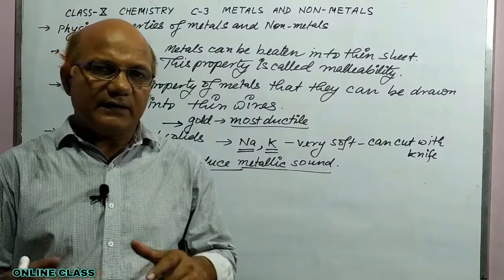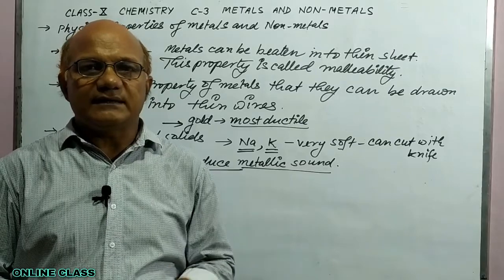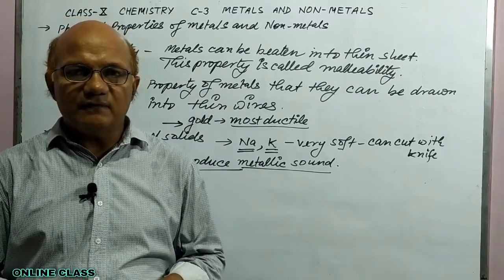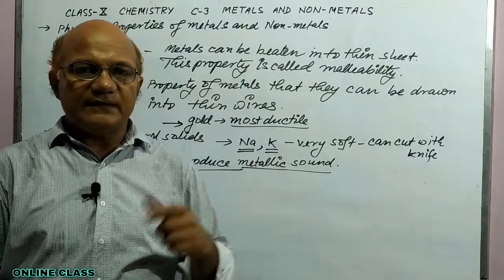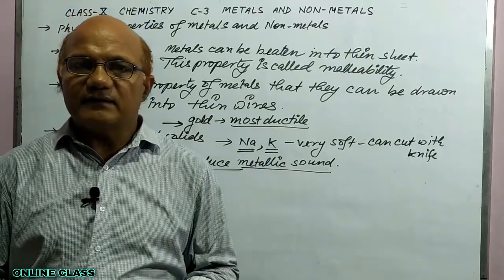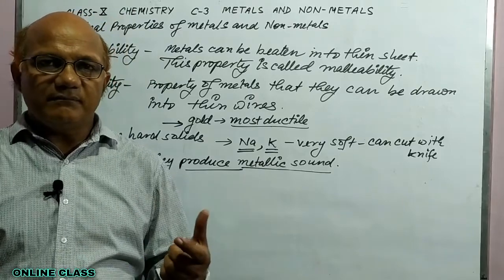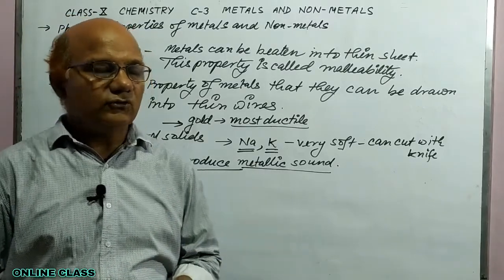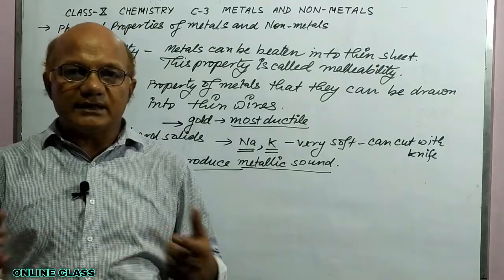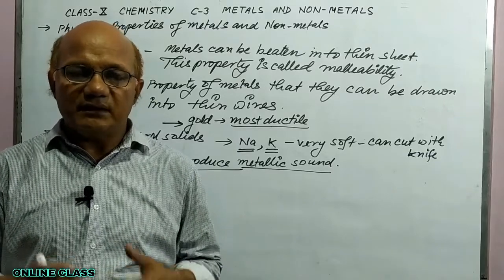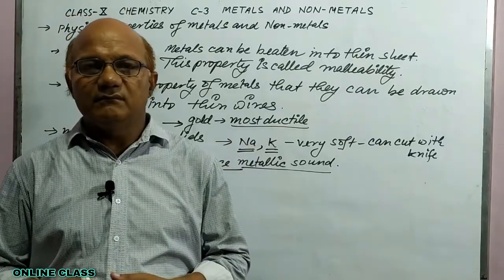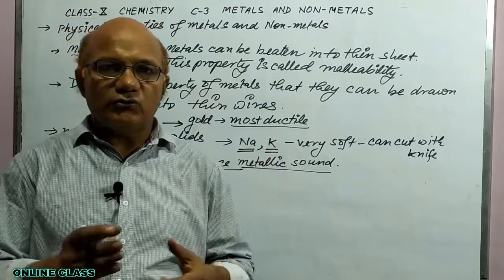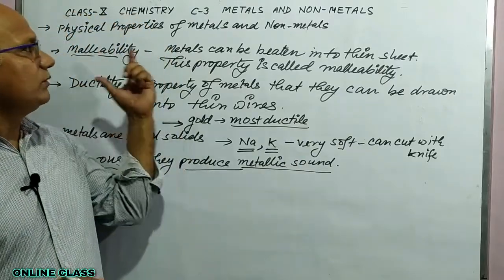To summarize: malleability means metals can be beaten into thin sheets. Ductility means metals can be drawn into thin wires. Metals are sonorous — when struck, they produce a characteristic sound. Generally metals are hard solids, but sodium and potassium are very soft metals that can be cut into small pieces with a knife. You can take a screenshot of this.